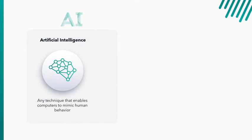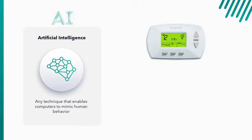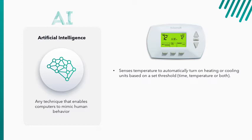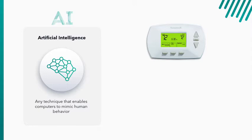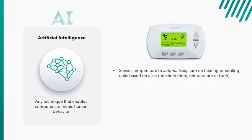So we'll use a thermostat here as an example to highlight some of these differences. So if we start with a thermostat that uses artificial intelligence. Most people have used these old school thermostats that allow you to adjust or set temperatures in a room and maybe program times that you want the temperature to be at a certain degree. But all these do is adjust temperatures to automatically turn on heating or cooling units based on set thresholds. And these thresholds could be time or temperature or both. So instead of you having to go turn on the heater when you're cold or turn on the AC unit when you're hot, this will actually mimic that behavior and do it automatically for you. So this would be an example of artificial intelligence. Not very complicated, but it is AI.